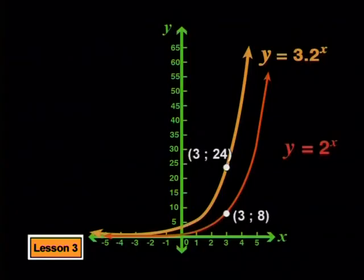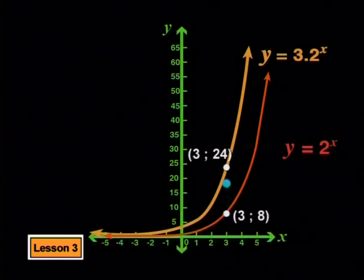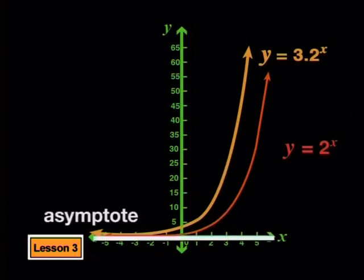For x equal to 3, there is a y value of 8 on the parent graph and a y value of 3 times 8, which is 24, on the new graph. So the point (3, 8) has been stretched vertically to become the point (3, 24). The asymptote has not moved — it remains at y equal to 0 for both graphs. So it seems that the a value does not affect the asymptote.